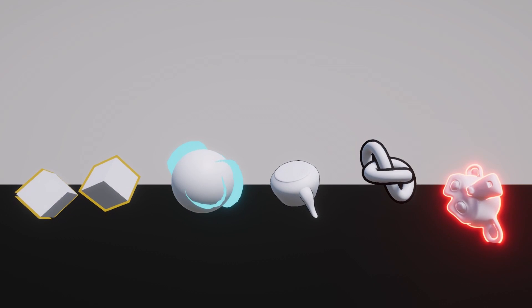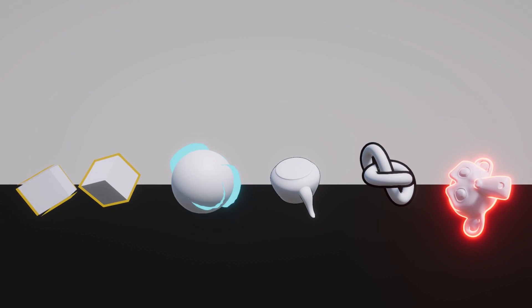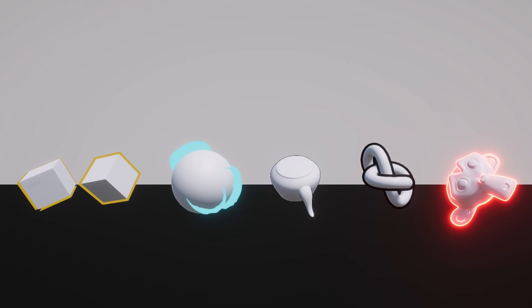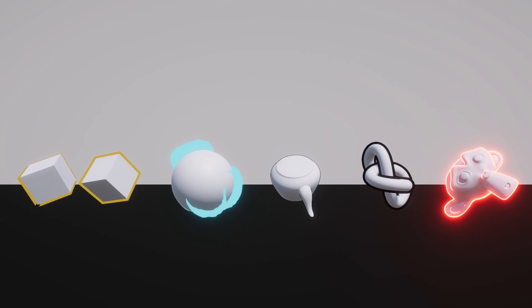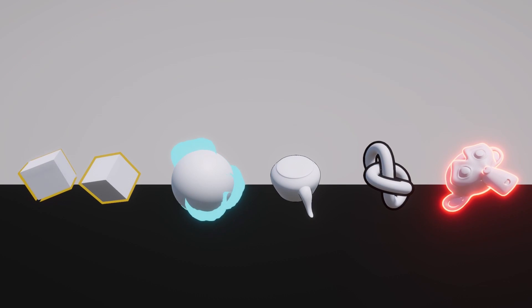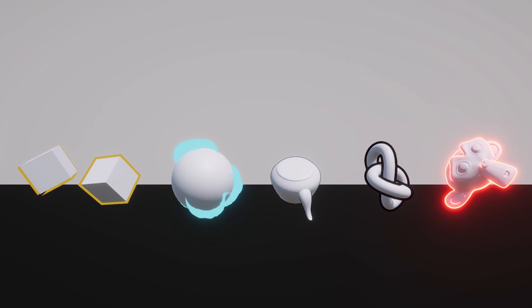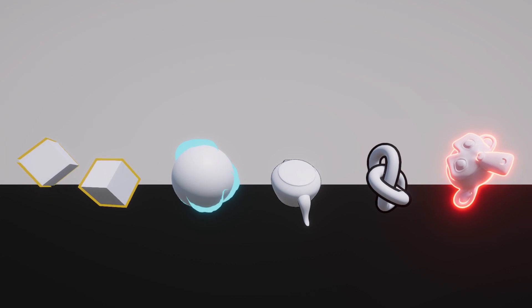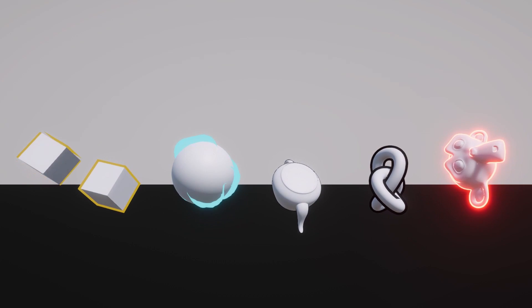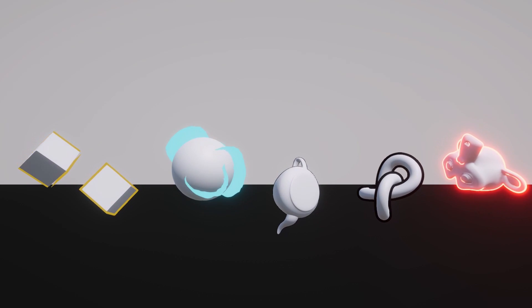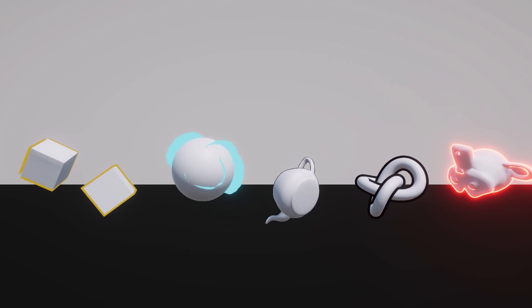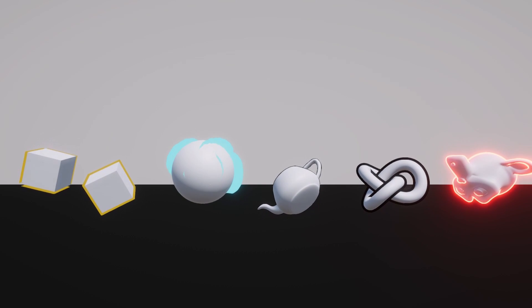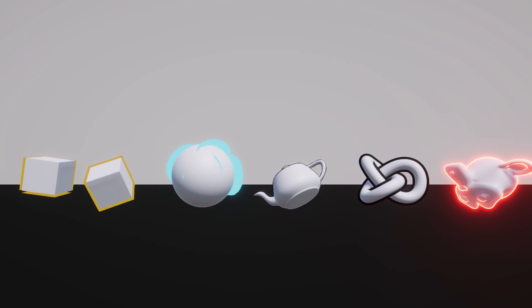Outline Objects is a versatile and user-friendly asset that allows you to outline objects in your Unity projects. With its simple setup, customizable options, camera distance scaling, and the ability to generate smooth normals, this asset provides an excellent solution to enhance the visual appeal of your scenes.